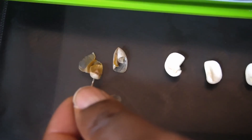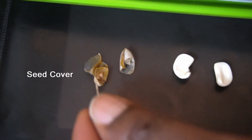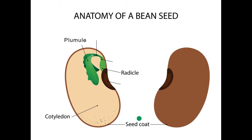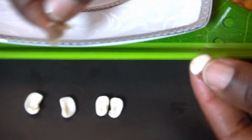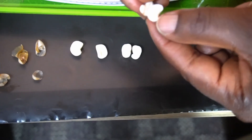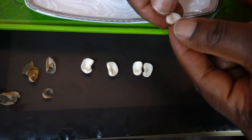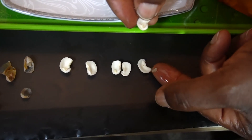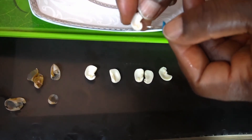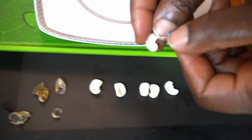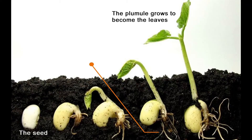This is actually the cover of the seed. I open it up so you can see the baby plant inside the seed — the embryo, the plumule, the radicle, and the cotyledon. The plumule will grow up to become the leaves, and the radicle will become the root.